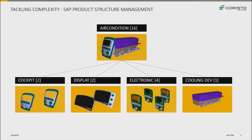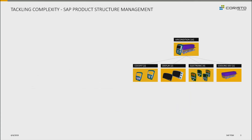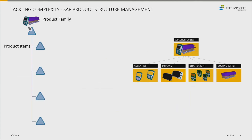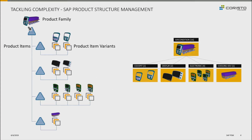For clarification, let's look at this as a representation of a structure in SAP PSM. Here we have the product family on top, then the product items, and beneath the product items, variants. That's a pretty good overview of the basics.